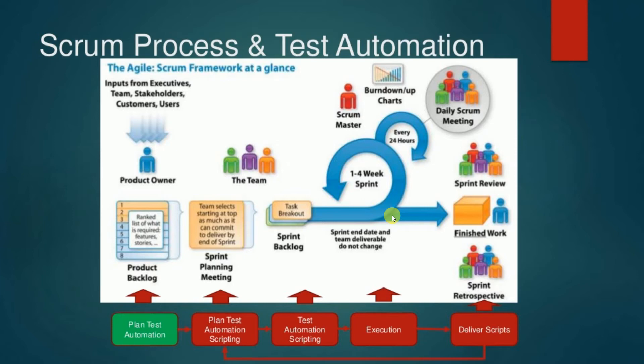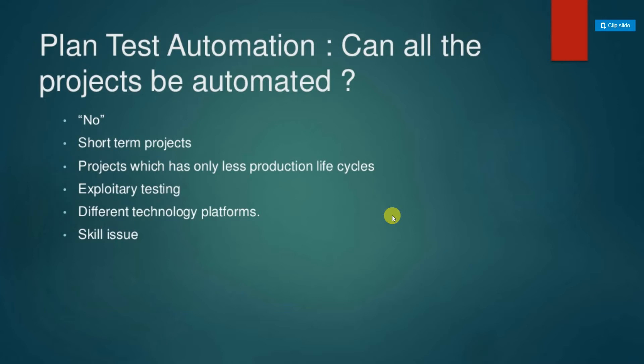The first phase where we can put automation is when we plan the product backlog. At the planning stage, we have to assess whether the project can be automated. We cannot always implement test automation for every project — short-term projects existing for two to four months, or projects with only one to three life cycles, should not be automated.